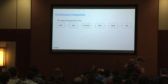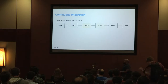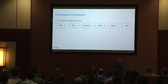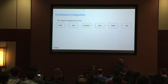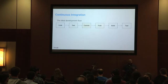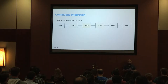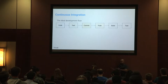What does continuous integration look like? You start with code, test locally, commit your changes, push them back to the repo, start a build, and then test. That's the perfect workflow — always straight from work to success.